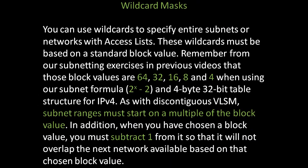Wildcard masks. You can use wildcards to specify entire subnets or networks with access lists. These wildcards must be based on a standard block value. Remember from our subnetting exercises that those block values are 64, 32, 16, 8, and 4 when using the subnet formula 2 to the power of x minus 2, and a 4-byte 32-bit table structure for IPv4. Subnet ranges must start on a multiple of the block value. When you have chosen a block value, you must subtract 1 from it so that it will not overlap the next network available based on that chosen block value.